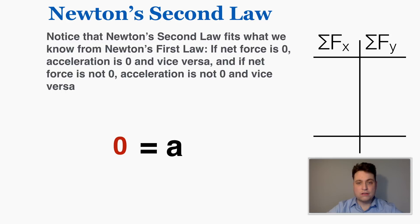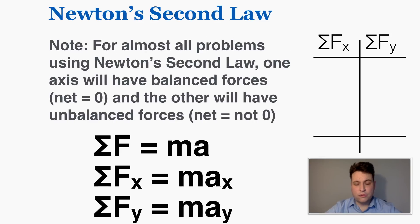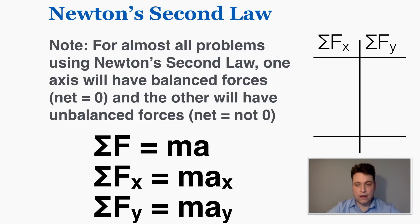And if net force is not zero, acceleration also has to not be zero, and vice versa. So Newton's second law confirms Newton's first law. For most problems involving Newton's second law, one axis will have balanced forces so the net force will equal zero Newtons, and the other will have unbalanced forces so the net force will not be zero — it will be equal to m times a in that direction.